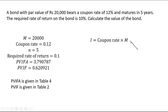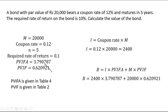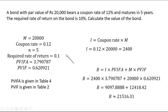So I is the coupon rate multiplied by the maturity value: 12% of 20,000 is 2,400. Which means every year for 5 years I am going to get 2,400 rupees. So the overall present value of the bond is I multiplied by PVIFA plus M into PVIF: 2,400 multiplied by 3.79 gives 9,097, and the maturity value 20,000 multiplied by 0.62 gives 12,480. Adding these up we get approximately 21,516 rupees and 31 paisa. Which means that if I buy the bond at 20,000 rupees, the present value is 21,516 — I should be buying this because the present value is more than 20,000.